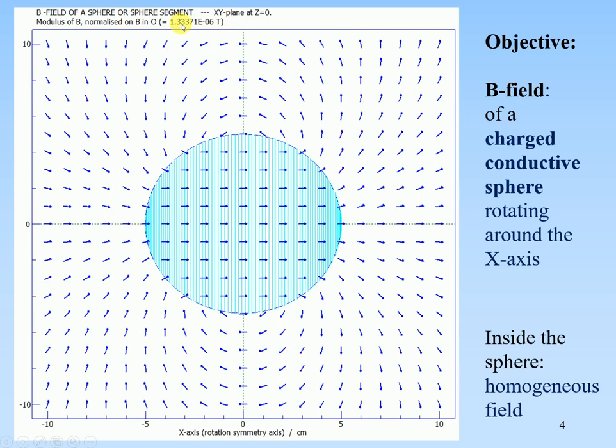We will see that for the first calculation we have an analytical approach, but for the second it is very difficult to do that analytically, and therefore we use a numerical approach. Our objective is to calculate the field on-axis and off-axis for a conducting charged sphere, rotating along the x-axis.